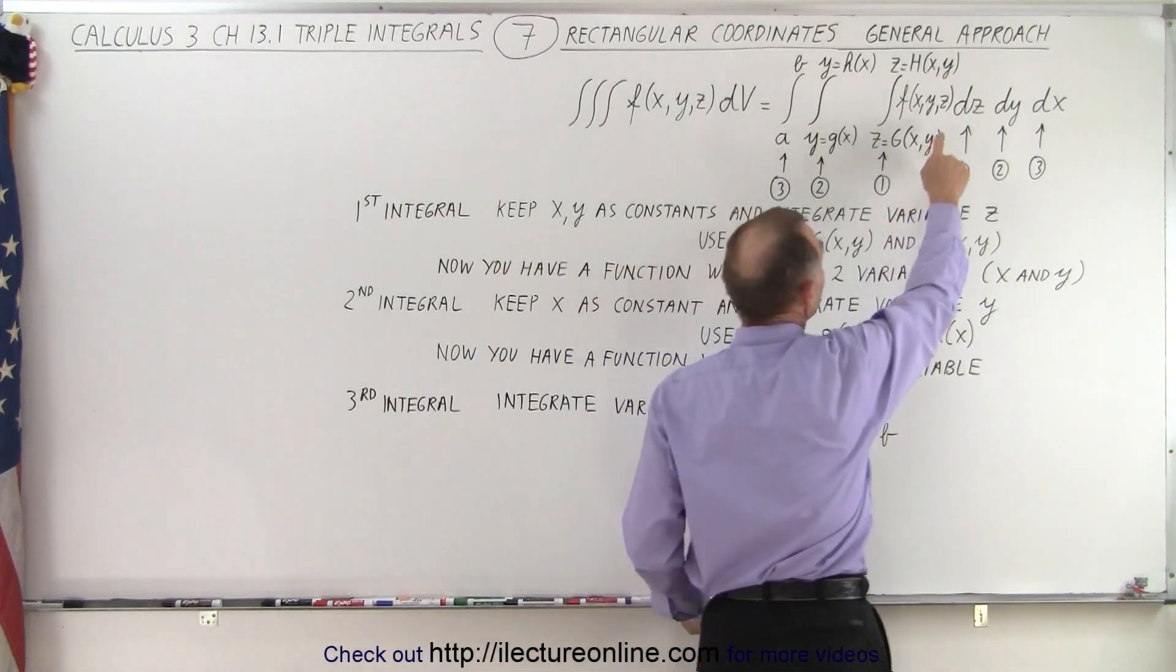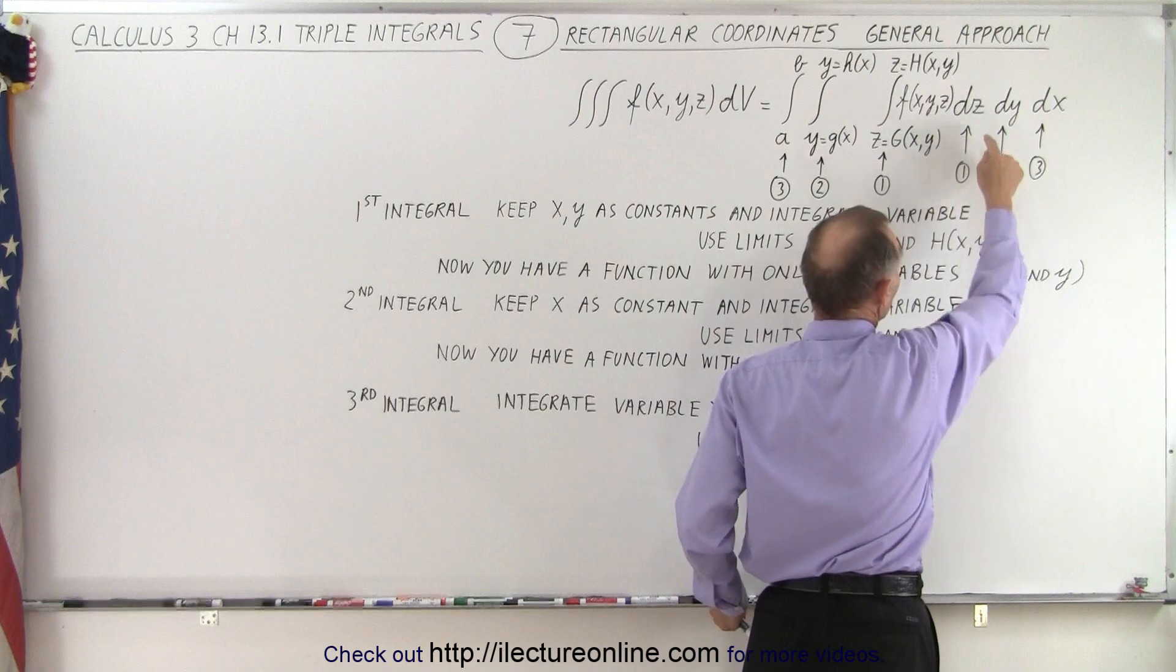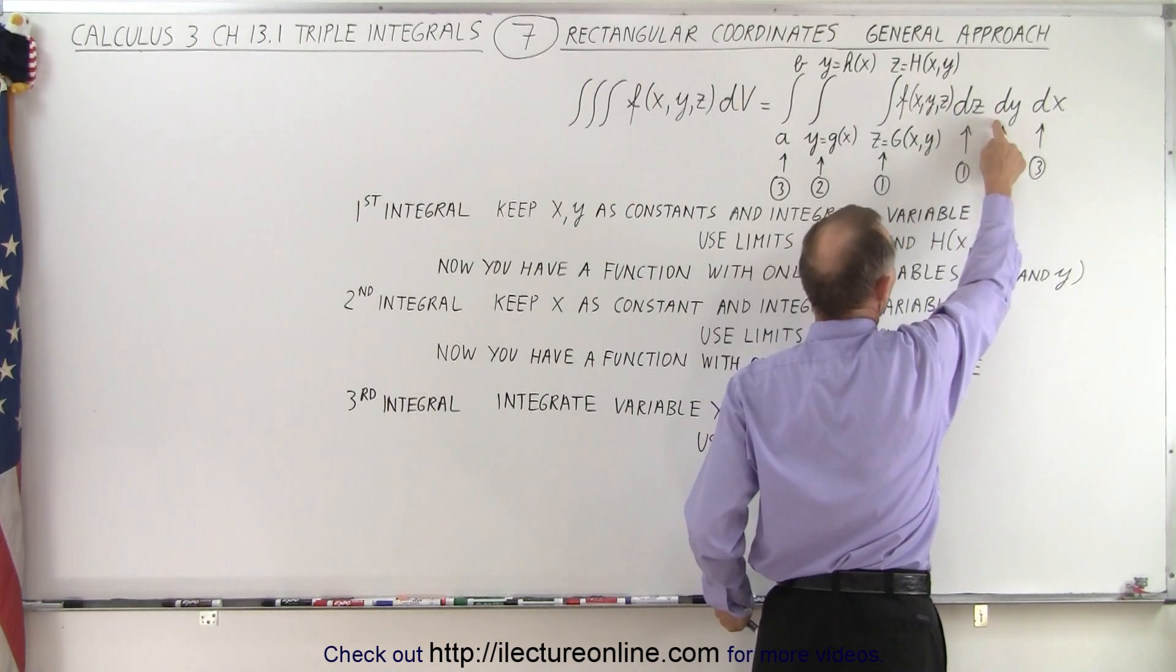It's a function of x, y, and z. And then we're going to multiply that times dv. That's a volume element, which is simply the product of dz, dy, and dx.